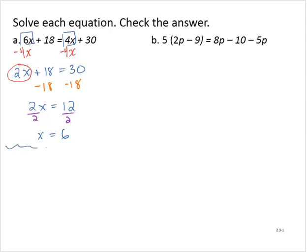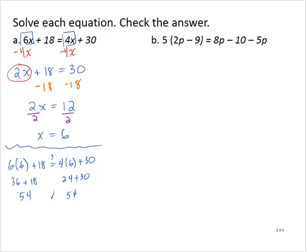We are asked to check the answer, so let's substitute. Is 6 times 6 plus 18 equal to 4 times 6 plus 30? Following the order of operations, we have 36 plus 18, which is 54. On the right-hand side, we have 24 plus 30, which is also 54. So that checks out, and the solution is x equals 6.